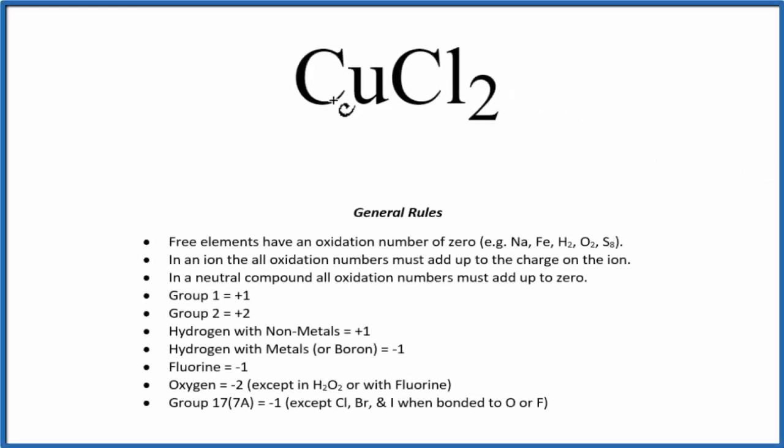To find the oxidation numbers for each of the elements here in CuCl2, we'll use these general rules here. When we look for copper here on our list, we don't see it. That's because copper can often be plus 1 or plus 2, depending on its oxidation state.